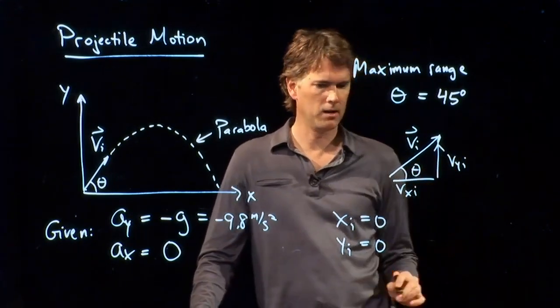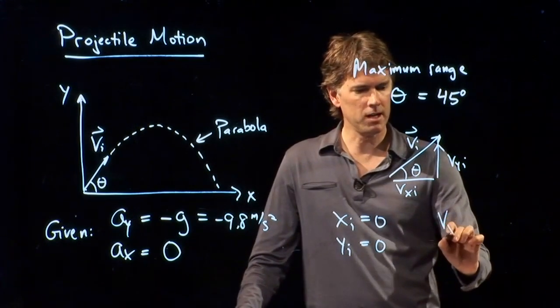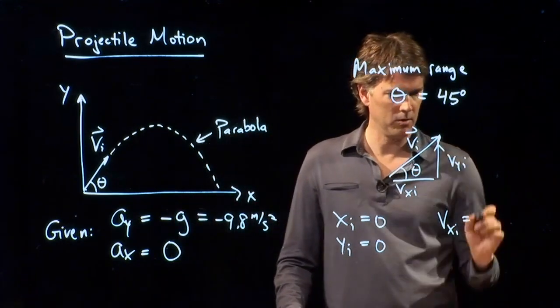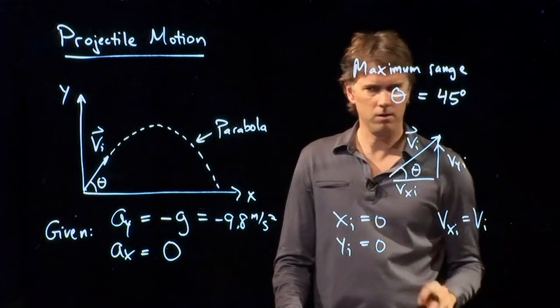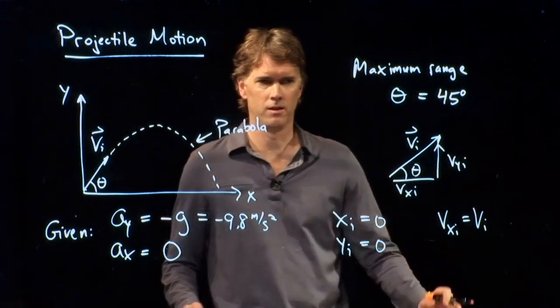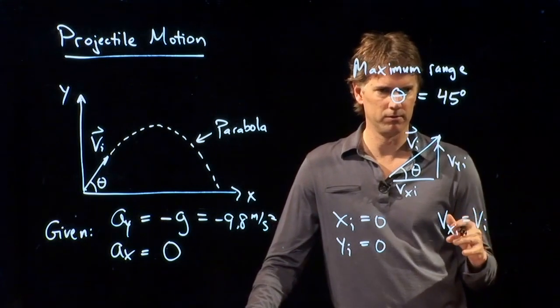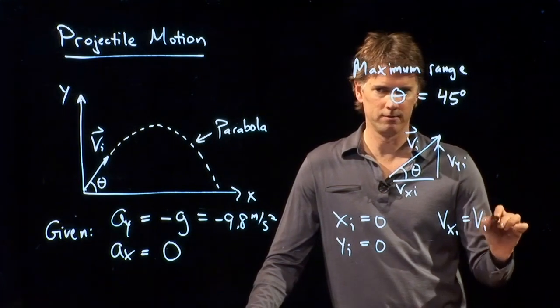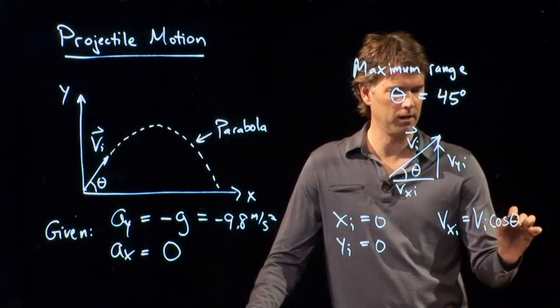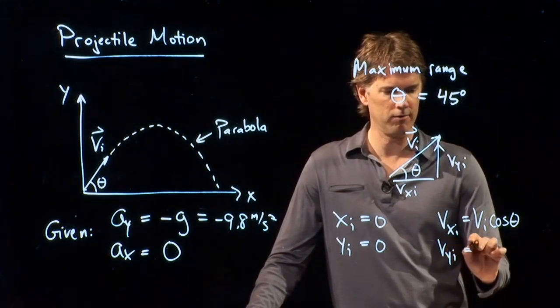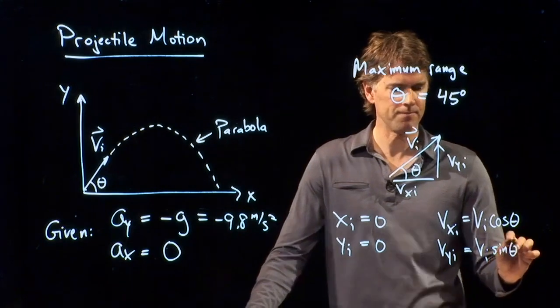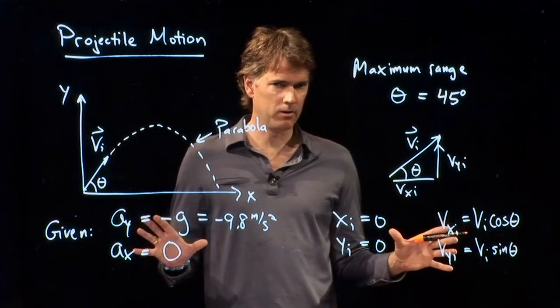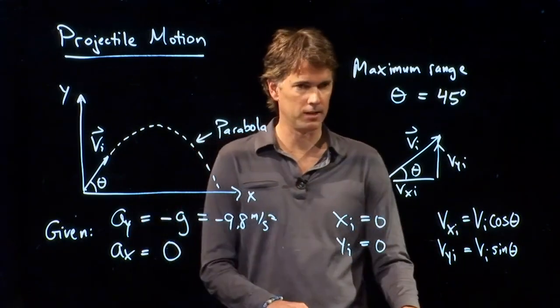And if that is angle theta, then what is v x i equal to? Is it vi sine theta or vi cosine theta? You guys remember SOHCAHTOA? Remember her? She's cool. She's good to know. Vi cosine, right? Cosine of theta. Vi is therefore sine of theta. We can put all this stuff together now into the kinematic equations.